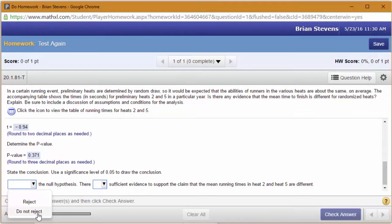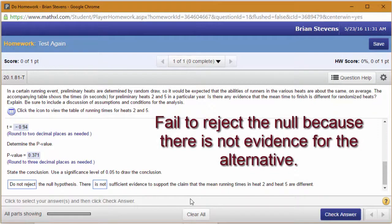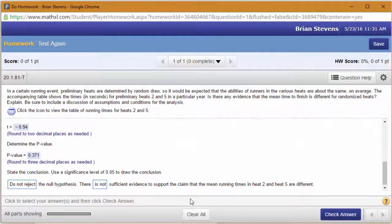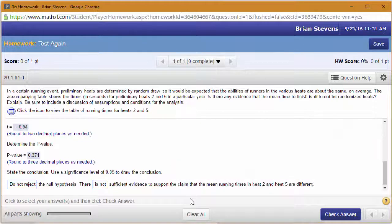I do not reject the null, which is fail to reject the null. There is not evidence, and these are the only two statements that can go together. I do not reject the null. There is not evidence to support the alternative. The alternative states that the running times for heat 2 and heat 5 are different. If we had rejected the null, we would have evidence for the alternative. Once again, you can only fail to reject the null and not have evidence for the alternative. Or you can reject the null because you have evidence for the alternative.